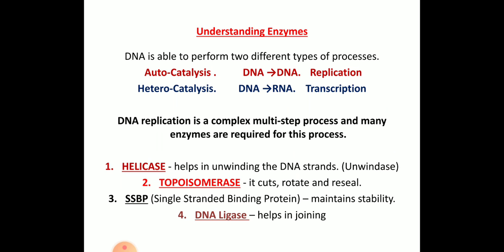The first enzyme is helicase. Helicase is an enzyme which helps in unwinding the DNA strands — that is why it is also called unwindase, and sometimes called the molecular motor. Topoisomerase cuts, rotates, and reseals the DNA strand. Once helicase unwinds the DNA, topoisomerase releases the tension so that the recoiled DNA does not coil again, preventing interference with newly synthesized DNA strand formation. Next, SSBP — single-stranded binding protein — helps in maintaining stability by keeping the strands apart.